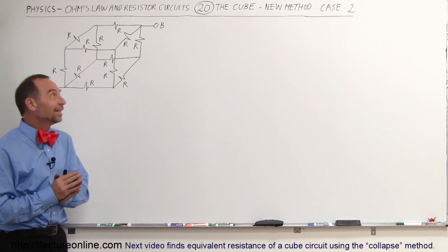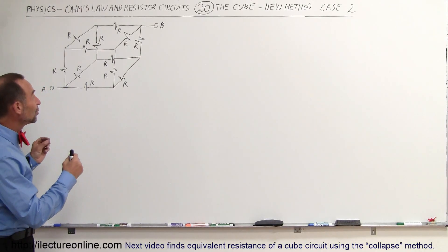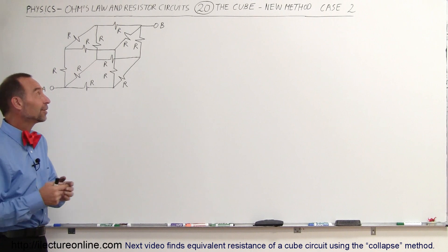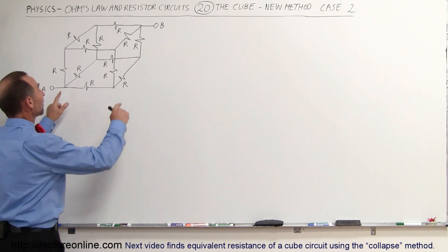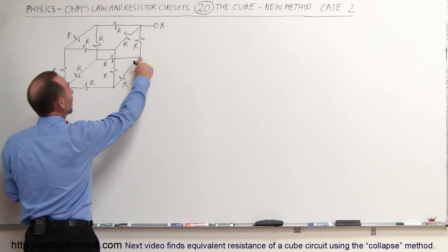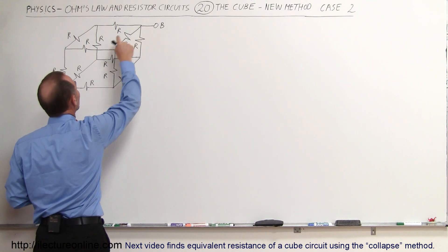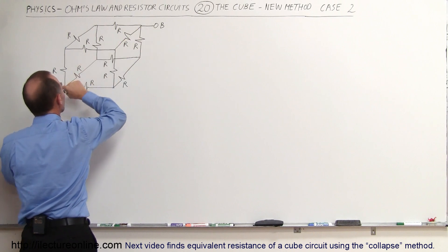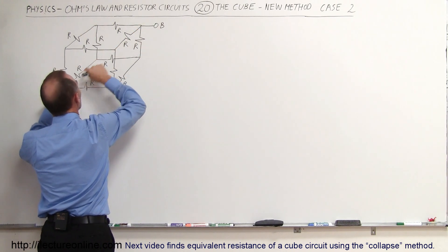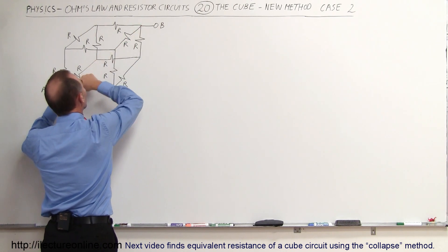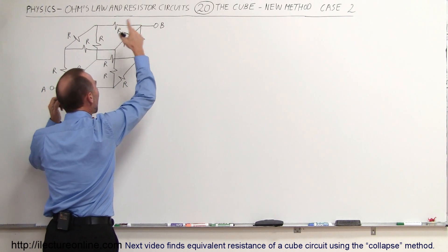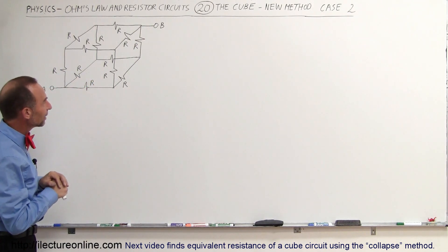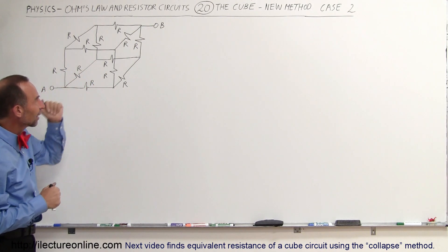Welcome to ElectronLine. We're going to do a similar cube circuit like we did in the previous video, but instead of having B on the bottom, we're going to have B on the top. So we want to find the equivalent resistance of a cube circuit with the two points in the opposite corners, diagonally across the entire cube.